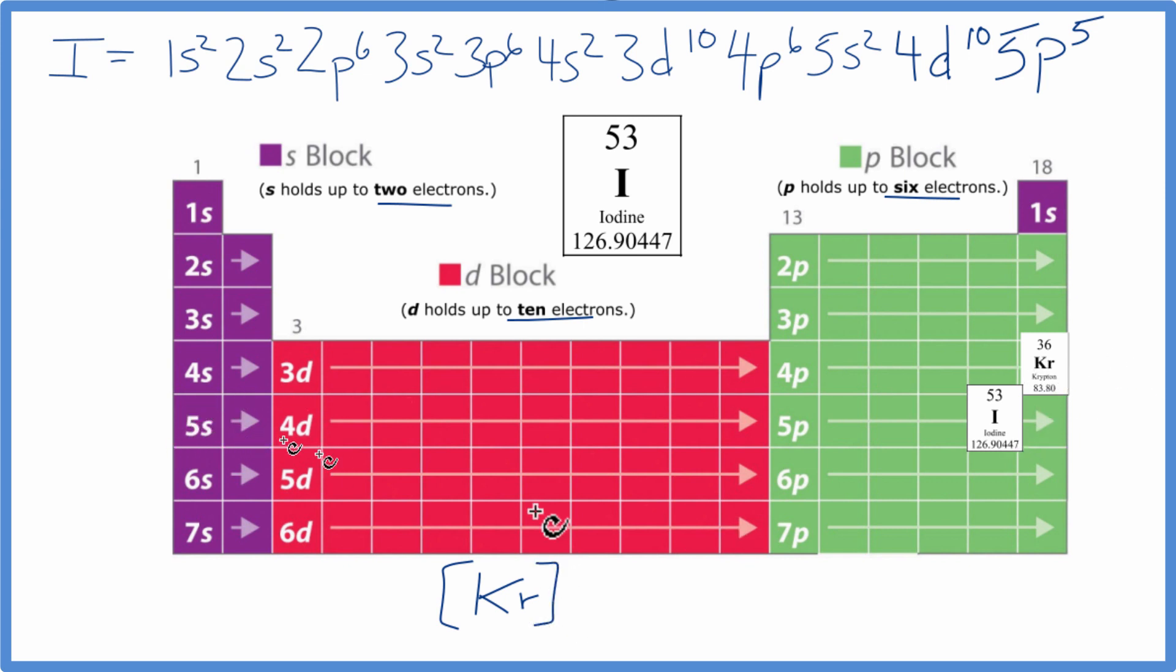So we have 5s2, 4d10, and then we go over to the 5p5. So this is the condensed notation for the electron configuration for iodine. Both are correct. Sometimes this is just a little easier to write out.